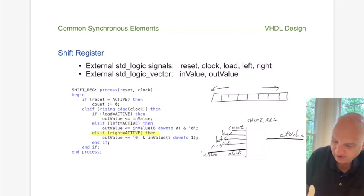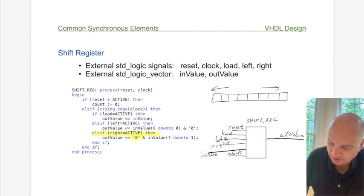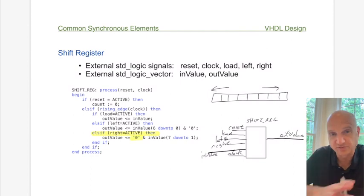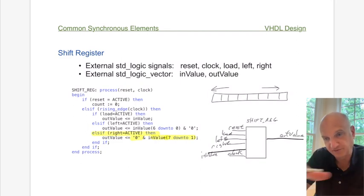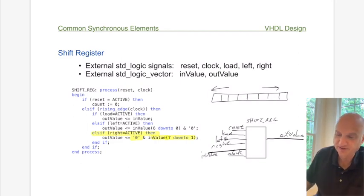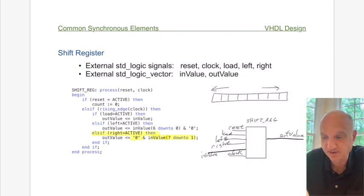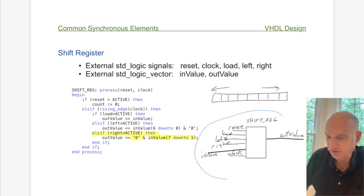For a right shift, it's the opposite — we start with a zero and concatenate the upper six bits, shifting right. That's the fairly simple shift-left/shift-right register. Also note the hierarchical priority: load is checked first, then left, then right — so if both load and left are active, load takes priority.